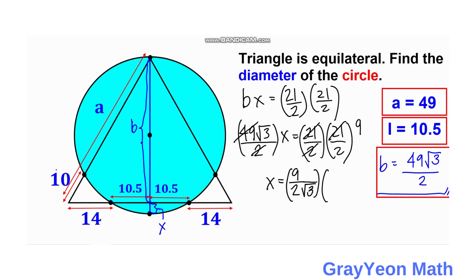So we cancel and simplify and this becomes 9, so we have X is equal to 9 over 2 times square root of 3. But we just need to rationalize this square root of 3 over square root of 3 so we have X is equal to 3 over 2 square root of 3.